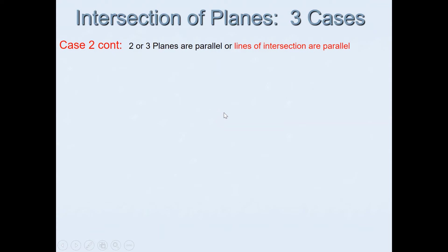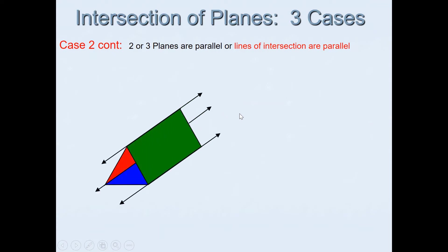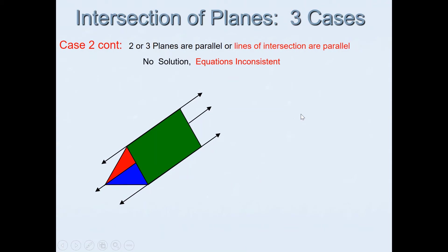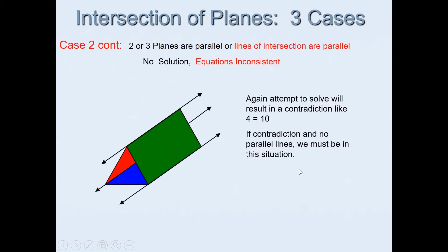Case 2 continued: you can also have lines of intersection that are parallel, arranged to form a triangular prism. In this case there is no solution — the equations are inconsistent. If you attempt to solve equations like this you will end up with a contradiction like 4 equals 10. If there is a contradiction and no parallel planes, you must be in this triangular prism situation.